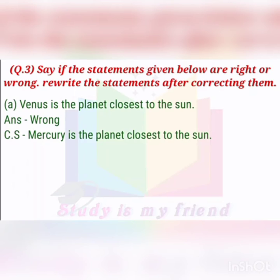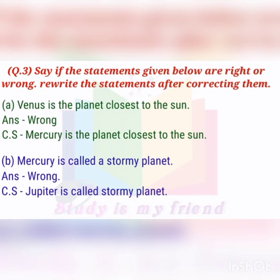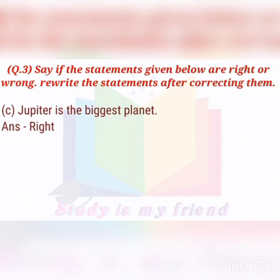Venus is the closest planet to the sun — that's wrong. Mercury is the planet closest to the sun. Mercury is called the stormy planet — wrong. Jupiter is called the snowy planet — wrong. Jupiter is the biggest planet — right. Jupiter is the biggest planet. Question number three is completed.